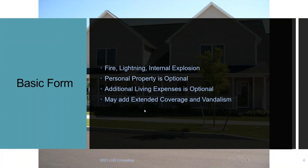There are three basic cause-of-loss forms: basic, broad, and special. You need to know these because they're very common on the test. The basic form covers fire, lightning, and internal explosion. Personal property coverage is optional. Additional living expenses is also optional on the DP1, but this may show up on your test — what is covered under a DP2 or DP3 that's not included in a DP1?